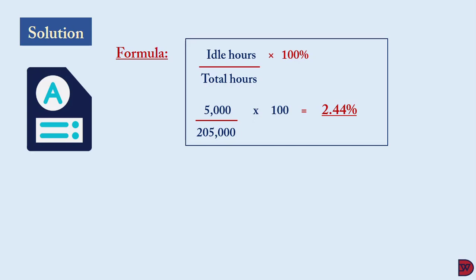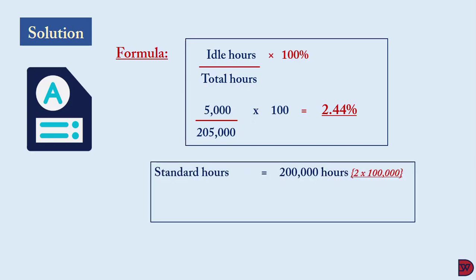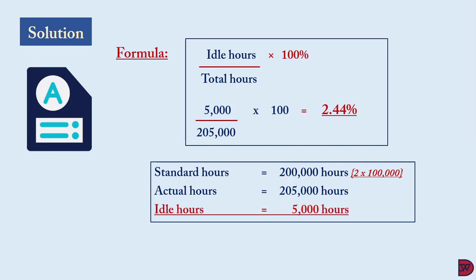The idle hours are calculated by establishing the standard hours — the amount of hours that should have been spent producing the 100,000 packs. Two hours were budgeted per pack, so for 100,000 packs they should have used 200,000 hours. They actually spent 205,000 hours, meaning the difference — 5,000 hours — is the idle time.